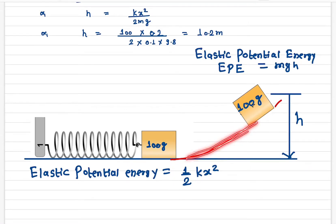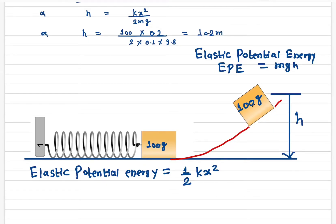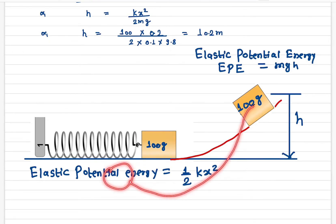We are assuming there is no friction between the block and the inclined plane — we are ignoring friction. If the friction force is ignored, then the total energy of the system remains constant. That means there is only conservation of energy, and the elastic potential energy will change into gravitational potential energy.